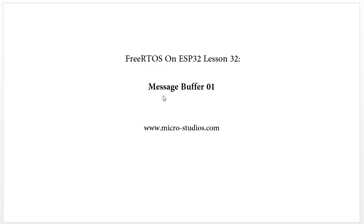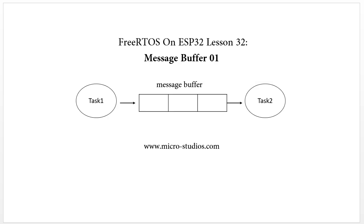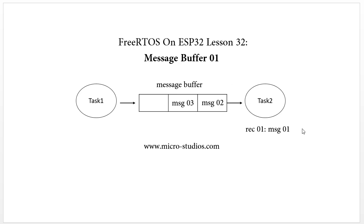The message buffer is very similar to the stream buffer, but there are a few differences between each other. Let's take a look at this picture first. Assume we have one task to send data into the message buffer and another task to read it out. We already sent three messages into the message buffer. For the receive task, each receive will only be able to receive one message — for example, receive message 01, receive message 02, and receive message 03.